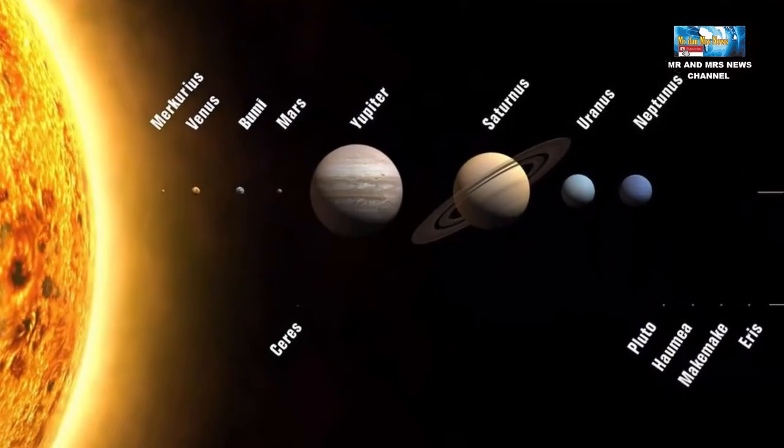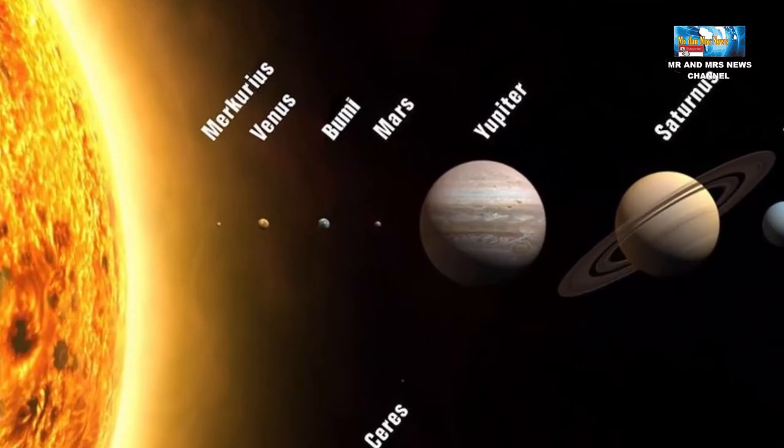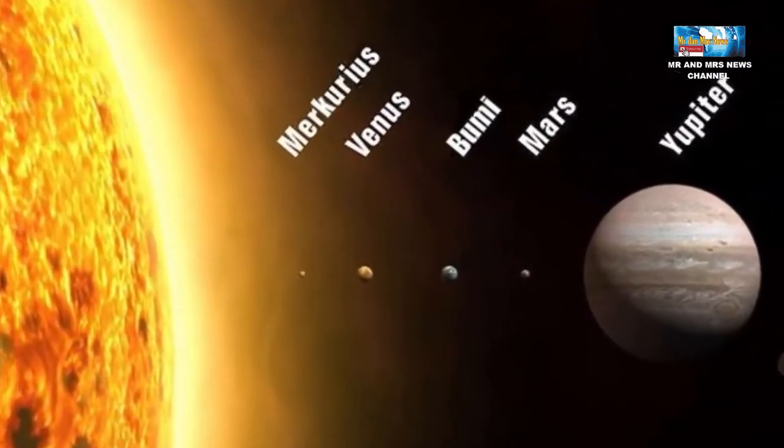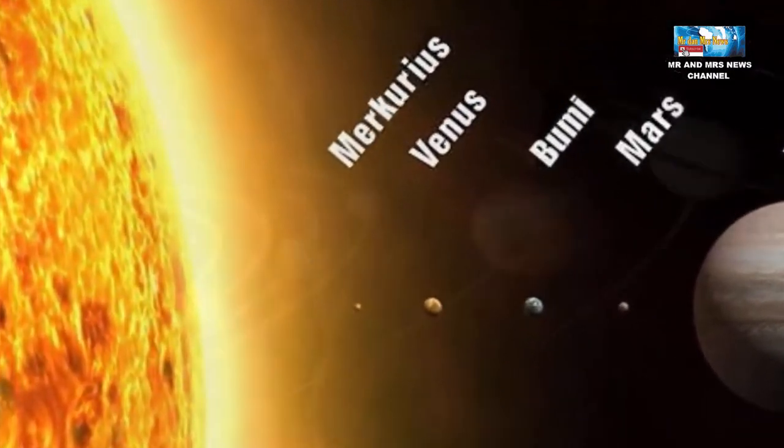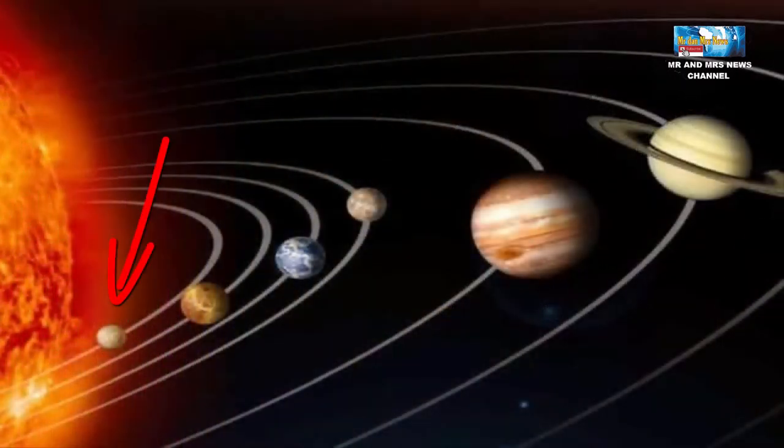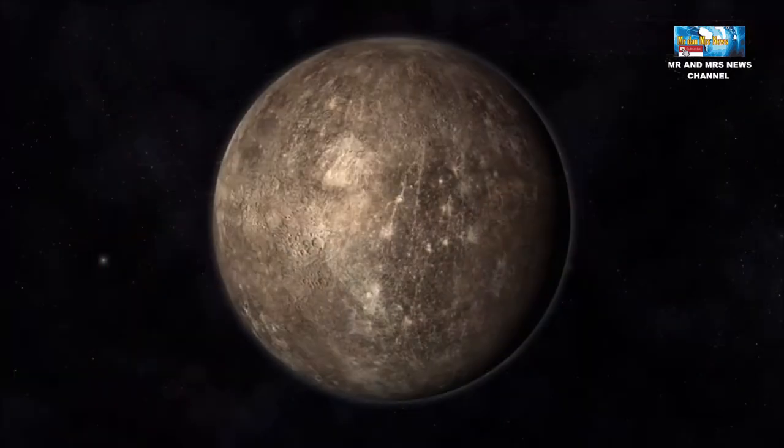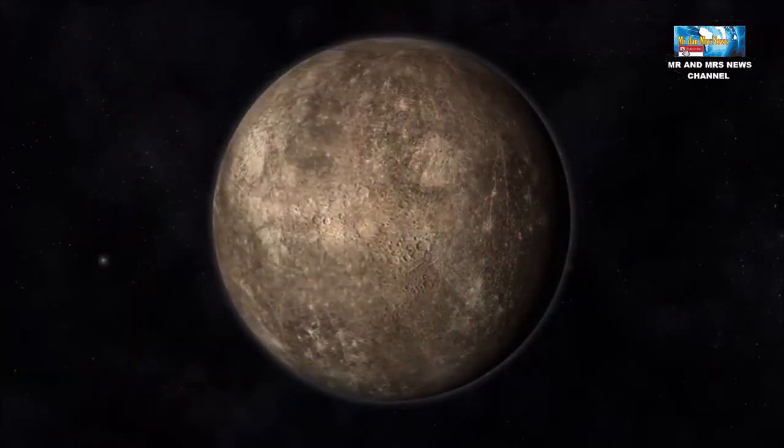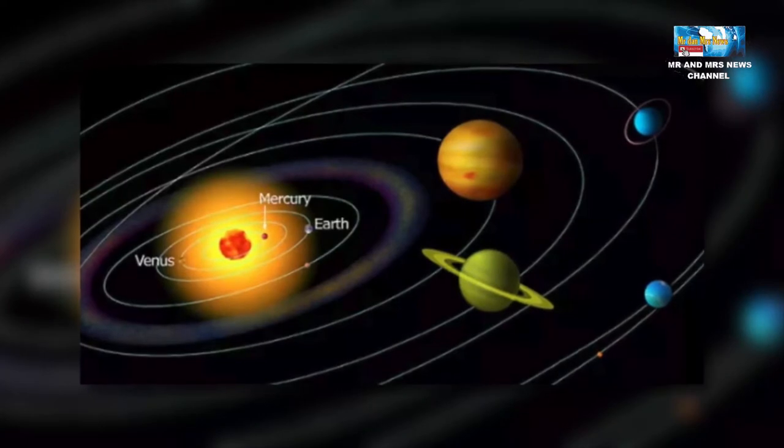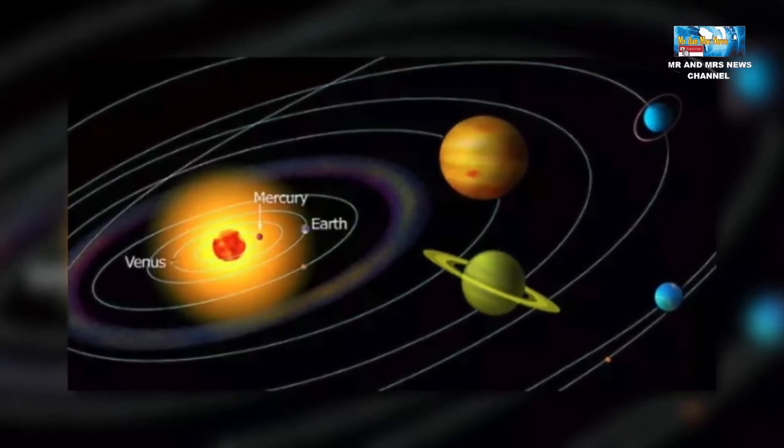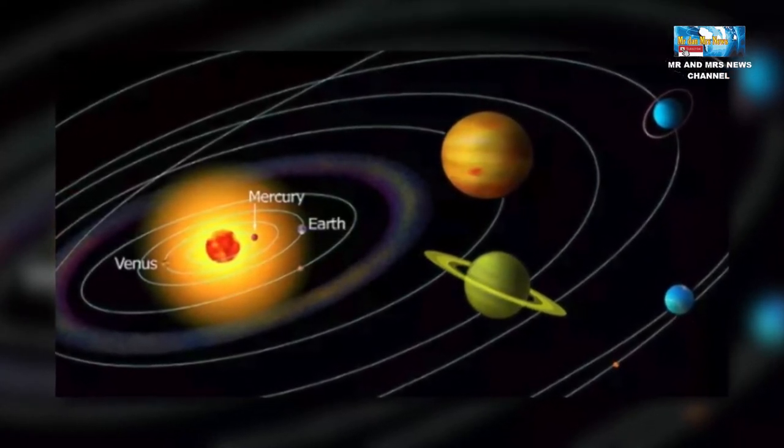Planet Merkurius adalah planet paling kecil di tata surya. Ukuran Merkurius hanya sedikit lebih besar dari bulan. Planet Merkurius terletak paling dekat dengan matahari. Uniknya, Merkurius bukan planet terpanas di tata surya. Merkurius adalah planet berbatu sama seperti Venus, Bumi, dan Mars.